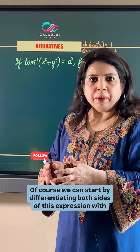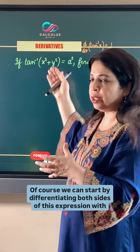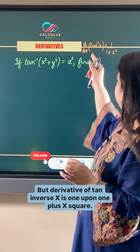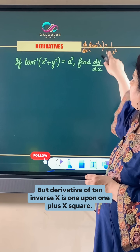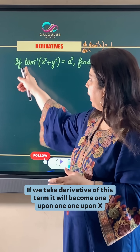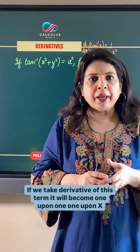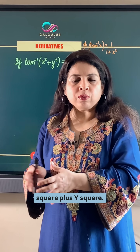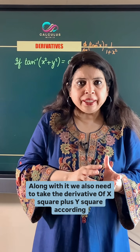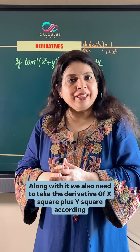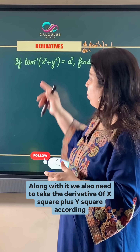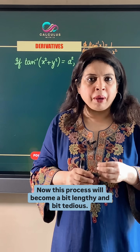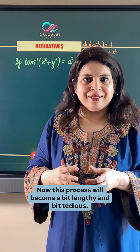We can start by differentiating both sides with respect to x. The derivative of tan inverse x is 1 upon (1 + x²), so this term becomes 1 upon (x² + y²). Along with it, we also need to take the derivative of (x² + y²) according to the chain rule. However, this process will become a bit lengthy and tedious.